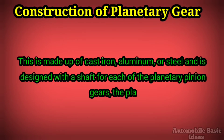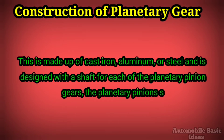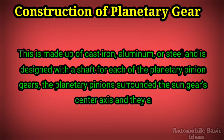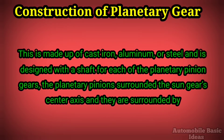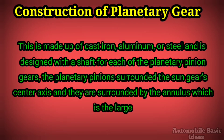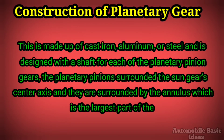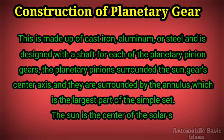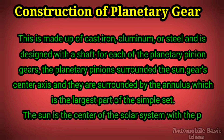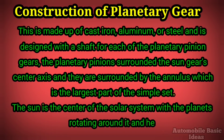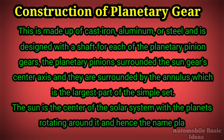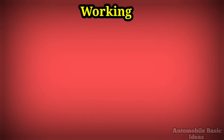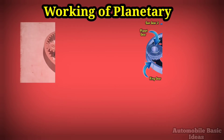The planetary carrier is designed with a shaft for each of the planetary pinion gears. The planetary pinions surround the sun gear's center axis, and they are surrounded by the annulus, which is the largest part of the simple set. Just as the sun is the center of the solar system with the planets rotating around it, hence the name planetary gear set.